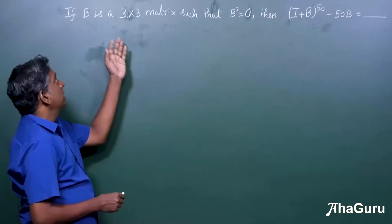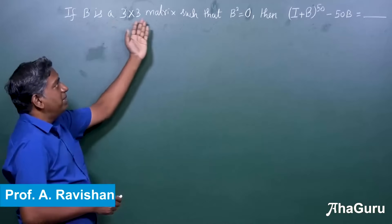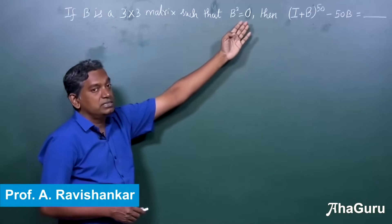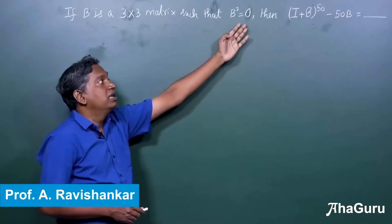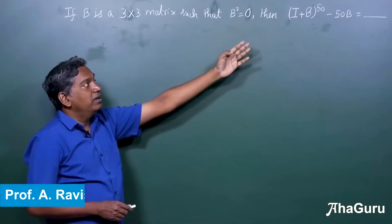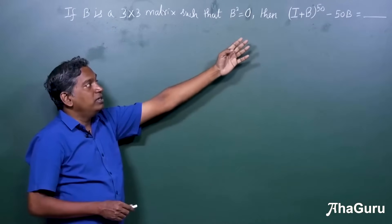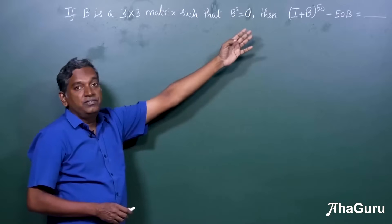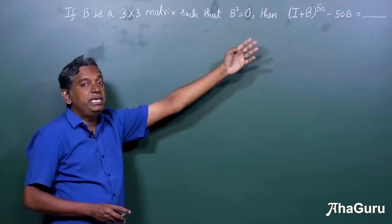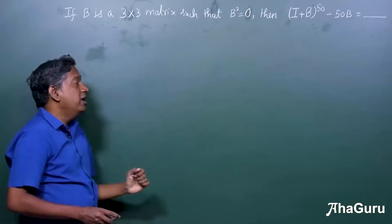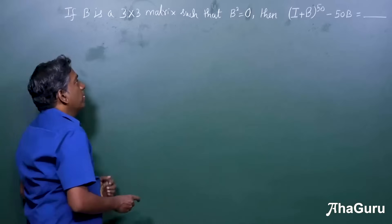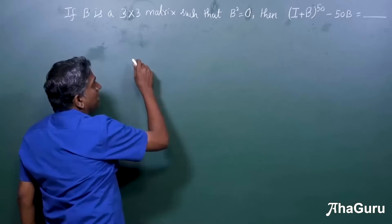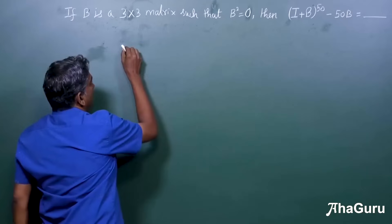We are given that B is a three by three matrix such that B squared is null. Then what is (I + B) to the whole power 50 minus 50B? Now, because B squared equals null...